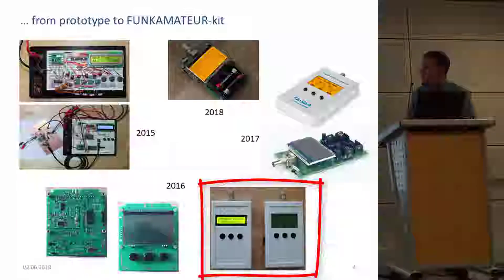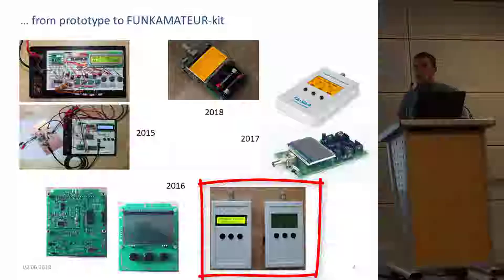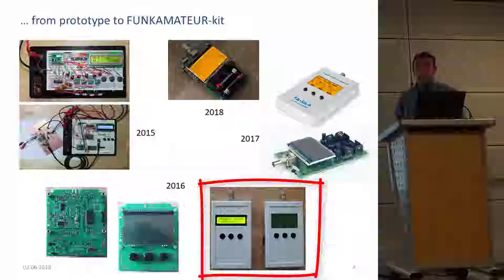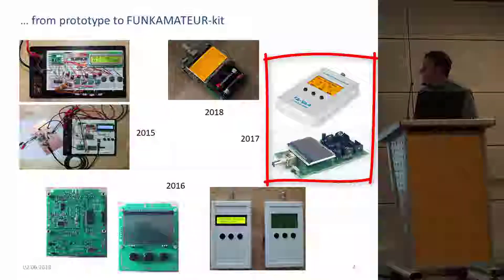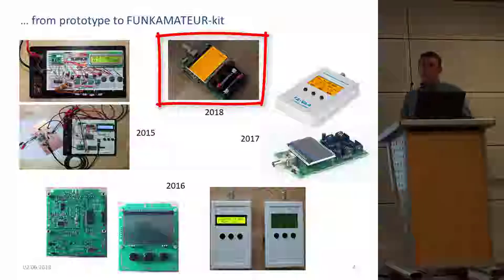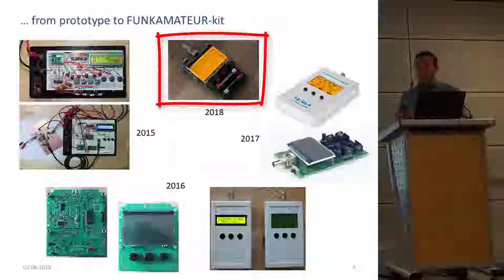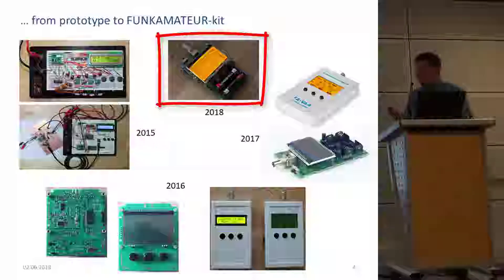Then we moved to some prototypes on a PCB with different models — you'll recognize one model with a two-line display. This was published in the American paper QST, but very quickly in Germany we decided to move on with a graphical version, because it gives so much advantage even if it's a little bit higher priced. So this is the first prototype built together with colleagues from Funk Amateur: the VA4, and then the VA5. I have to thank many colleagues also from the US who sent in a lot of interesting comments and requests — as far as I remember, everything went into the VA5.